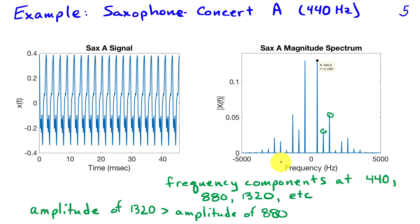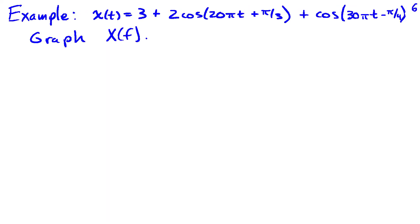In later videos we'll discuss how to represent x(t) as a sum of sinusoids, but for now we'll assume the representation is given and our task is to find the spectrum. Here's an example: x(t) = 3 + 2·cos(20πt + π/3) + cos(30πt − π/4). We want to find the spectrum and graph it.